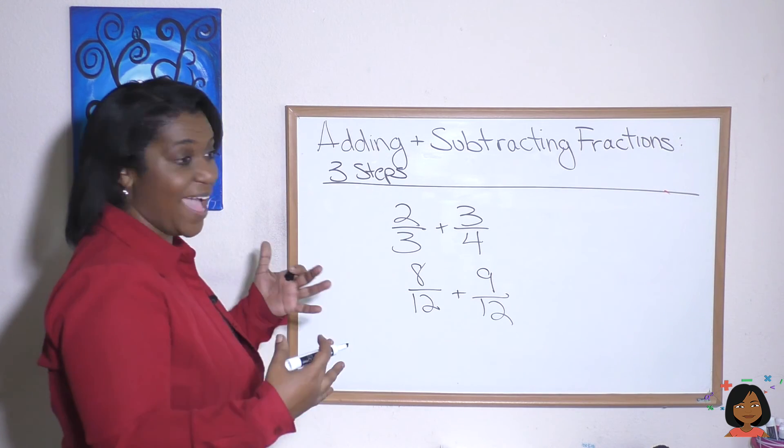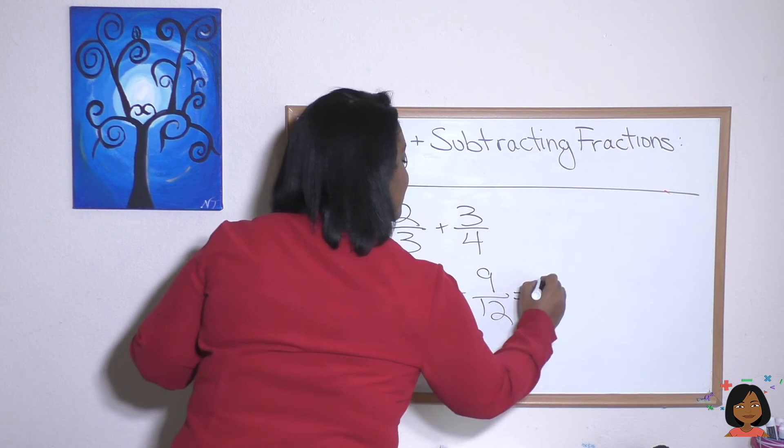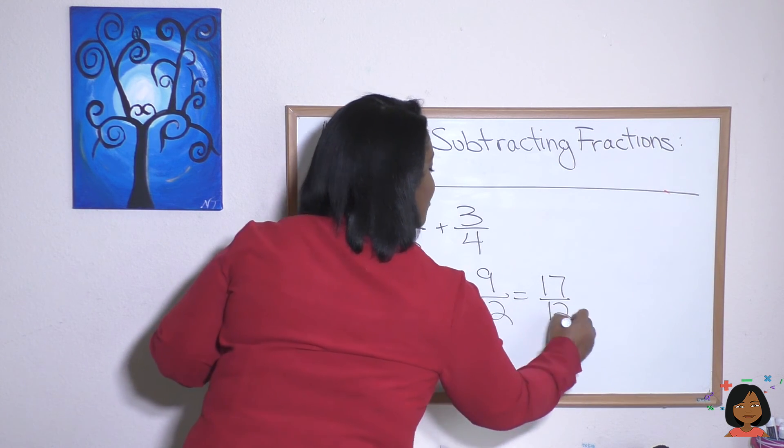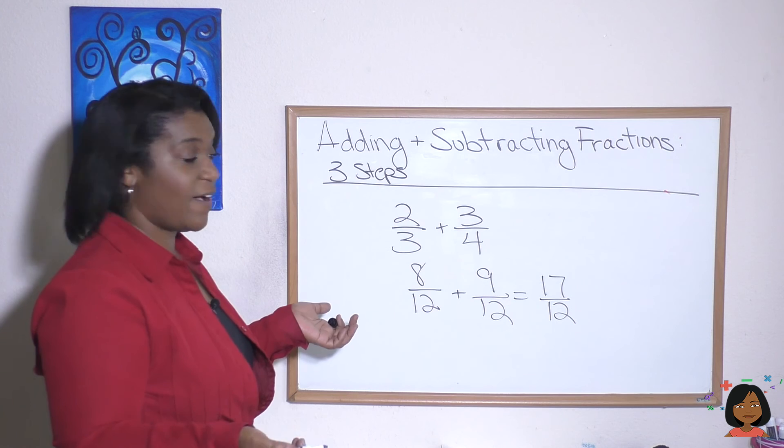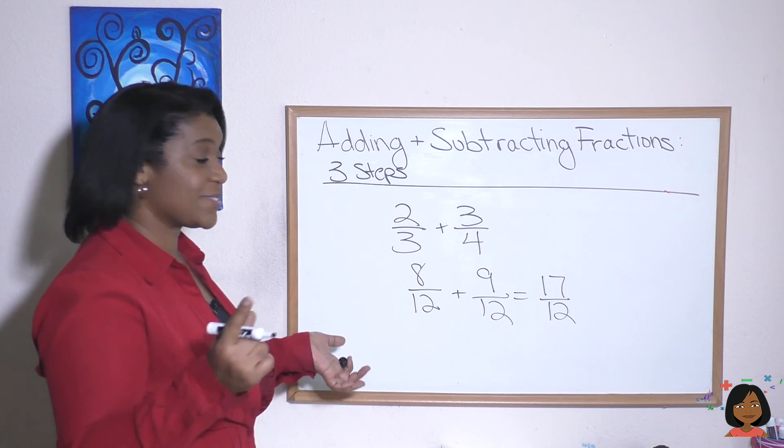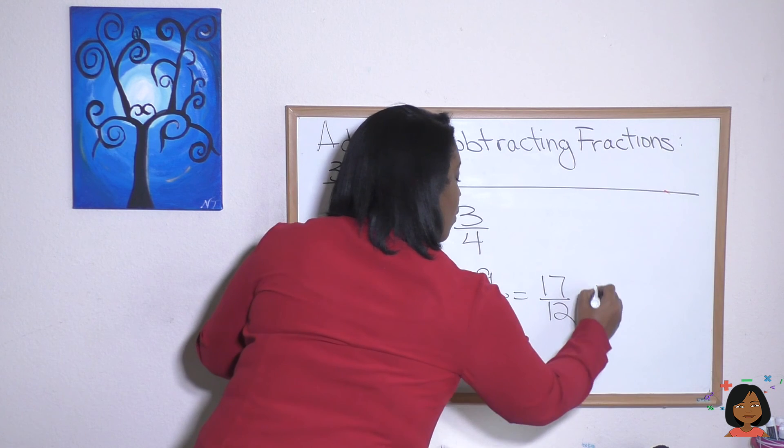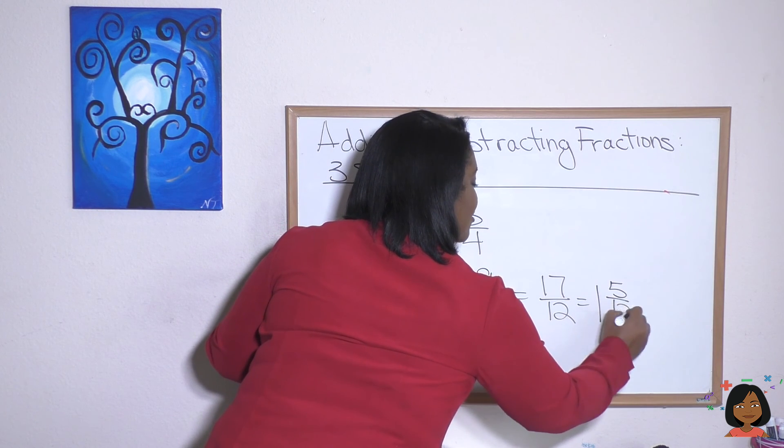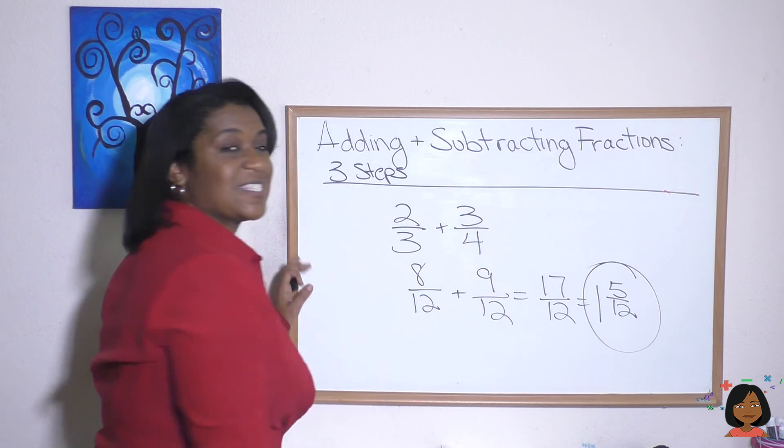Let's operate, which is add in this situation. Eight plus nine is seventeen over twelve. And then the last part is to simplify. So we have seventeen over twelve. We can turn that into a mixed number, which is going to be one and five twelfths. That is a fully simplified answer.